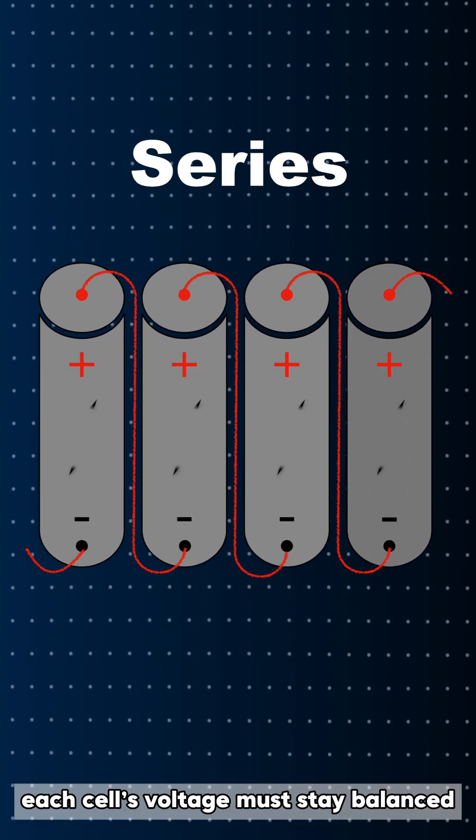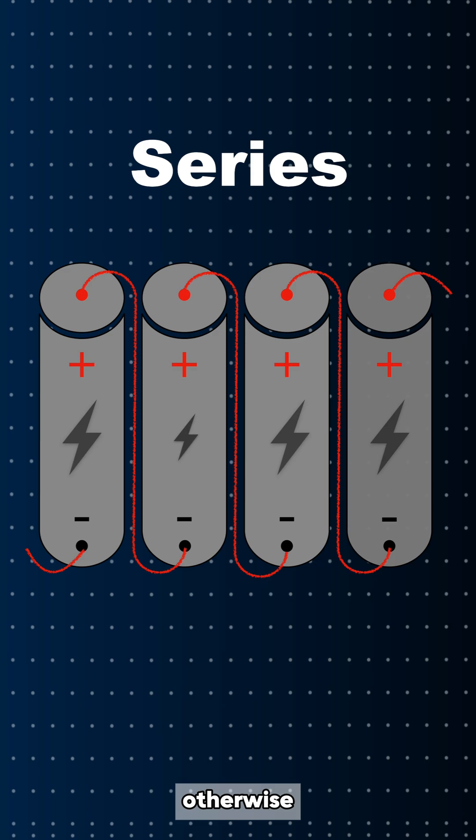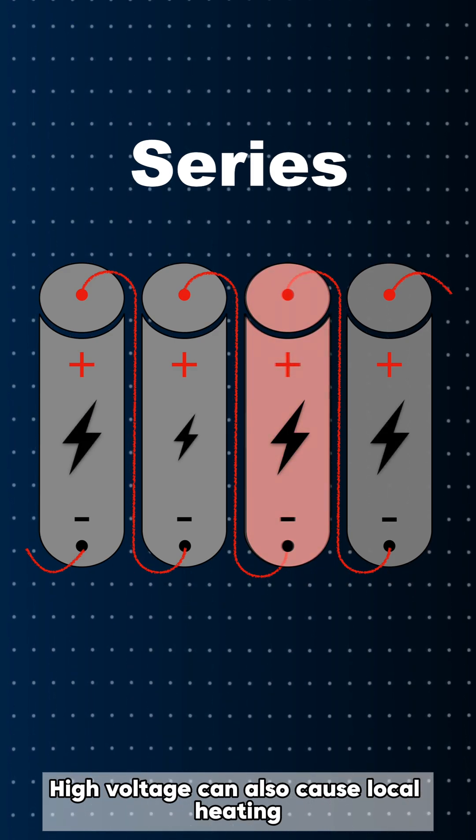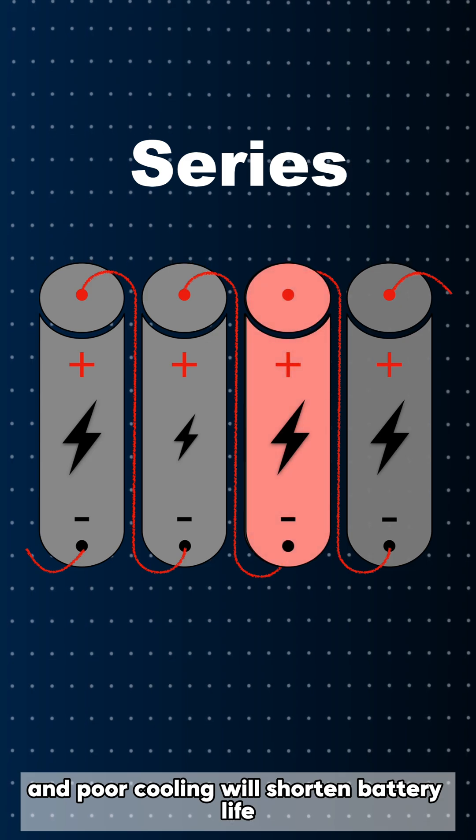However, each cell's voltage must stay balanced. Otherwise, overcharge or over-discharge may occur. High voltage can also cause local heating, and poor cooling will shorten battery life.